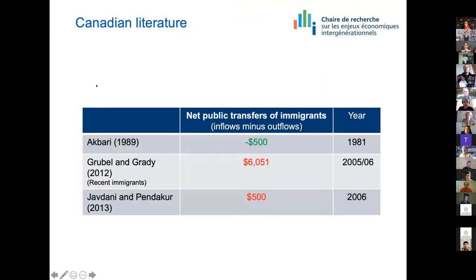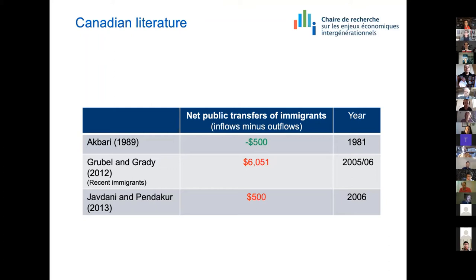The Canadian literature tries to compare contributions and public transfers received by immigrants on one side and sometimes natives on the other. There was a really old paper by Akbari in 1989 concluding that immigrants had a net positive contribution of $500 to the public transfer system. More recently, a controversial paper by Grubel and Grady focused on recent immigrants and concluded on a net cost of $6,000. One of the main articles in the Canadian literature is by Javdani and Pendakur, who concluded on a net cost per capita of $500.